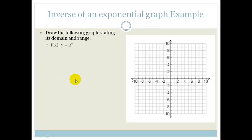Now let's look at an example. It says draw the following graph stating its domain and range. We've got f(x) = 2^x. The first thing we're going to do is let x be certain numbers. If we let x equal 0, then we've got y is equal to 2 to the 0 which equals 1. When x is 1, your y is going to be 2 to the 1 which is 2. When x is negative 1, y is going to be 2 to the negative 1 which is a half. You can see that this graph goes up like that.